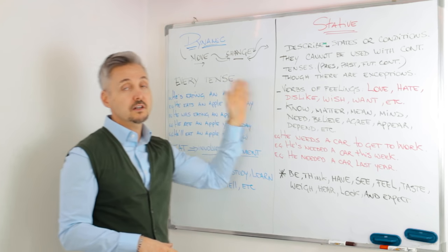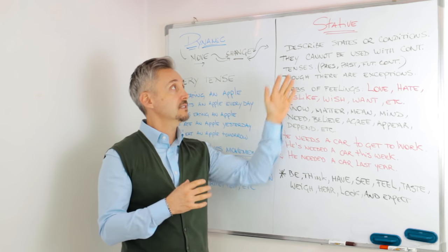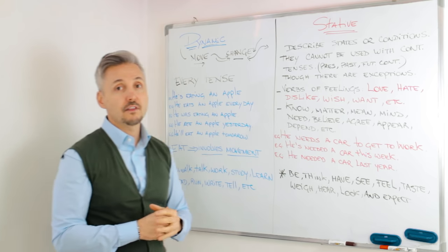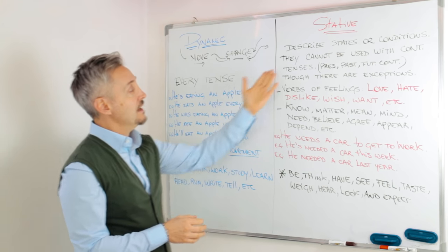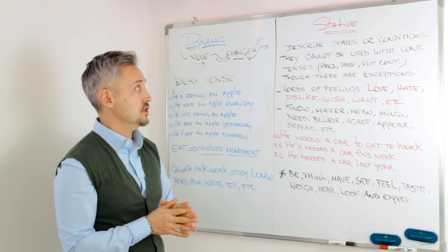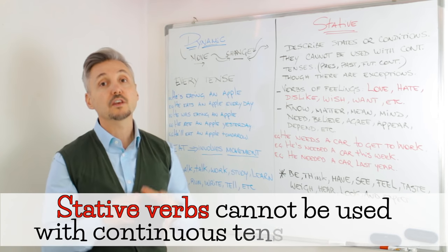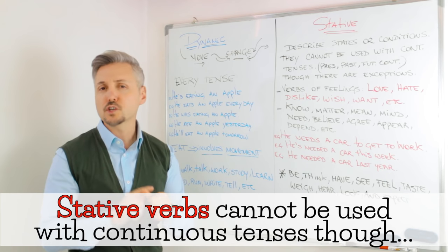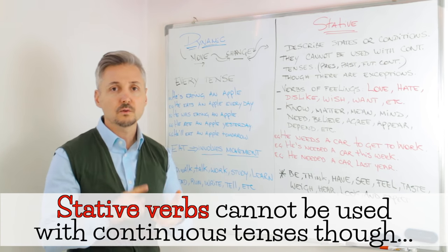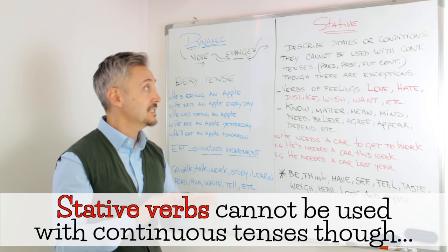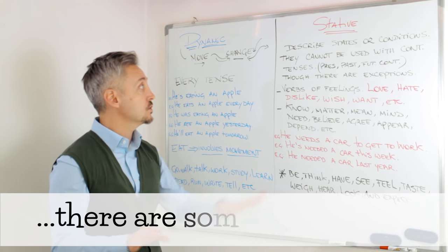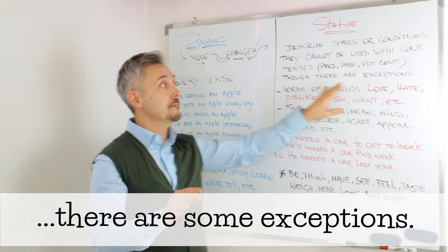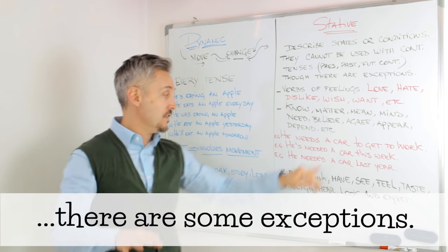What I want to concentrate on in this lesson is the stative part of the verbs. So we said that they describe states or conditions, and they cannot be used with continuous tenses. Future continuous, present continuous, present perfect continuous, etc. They cannot be used. Though there are some exceptions. I'm going to look back in a minute.